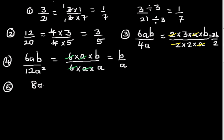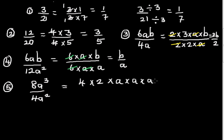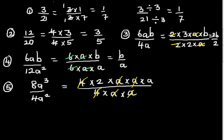What if it is 8a cubed divided by 4a squared? Write 8 as 4 times 2, so the numerator is 4 times 2 times a times a times a, and the denominator is 4 times a times a. The 4 and 4 cancel, and the two a's cancel. What remains on top is 2 times a, and nothing remains on the bottom, so you write 1. So the final answer is 2a divided by 1, which is 2a.